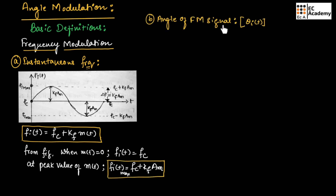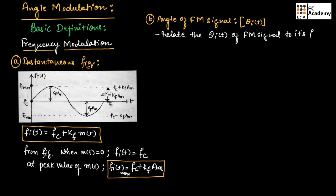Let us understand the angle of the FM signal, θi(t). We can relate the instantaneous angle θi(t) of the FM signal to its instantaneous frequency Fc as: Fc = (1/2π)·d/dt[θi(t)].